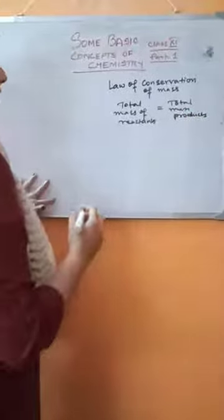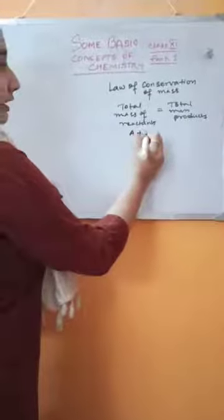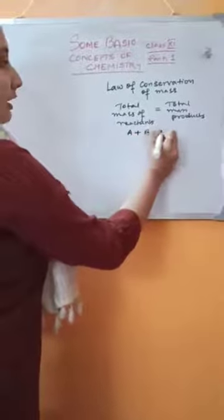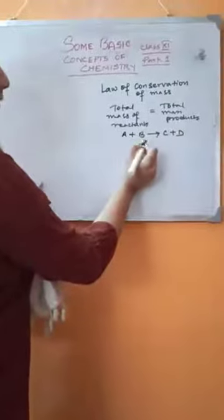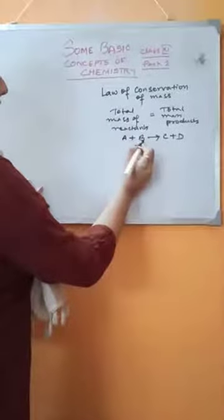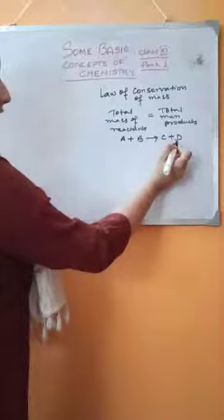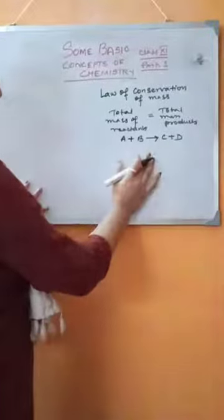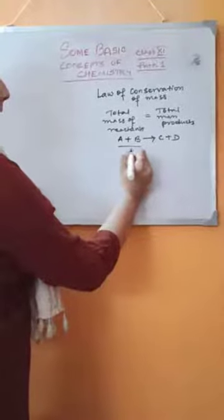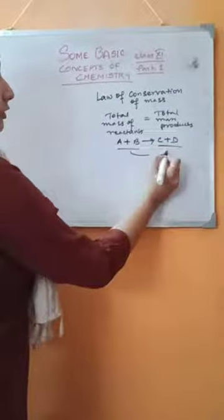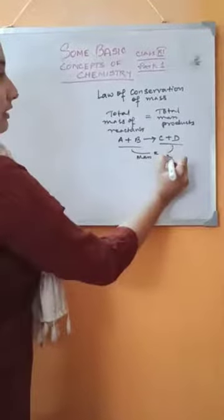If we consider a reaction such that two reactants A and B combine to give two products C and D, and if we measure the masses of the reactants and the masses of the products at the end of the reaction, then we will see that the total mass of A and B will be equal to the total mass of C and D.